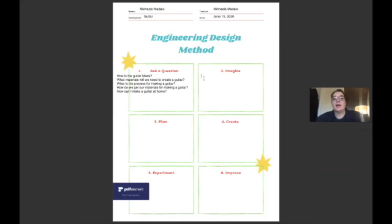Our first question is how is the guitar made? We can brainstorm and imagine some answers. We can say that it is made in a factory, that it is handmade or made by machinery.